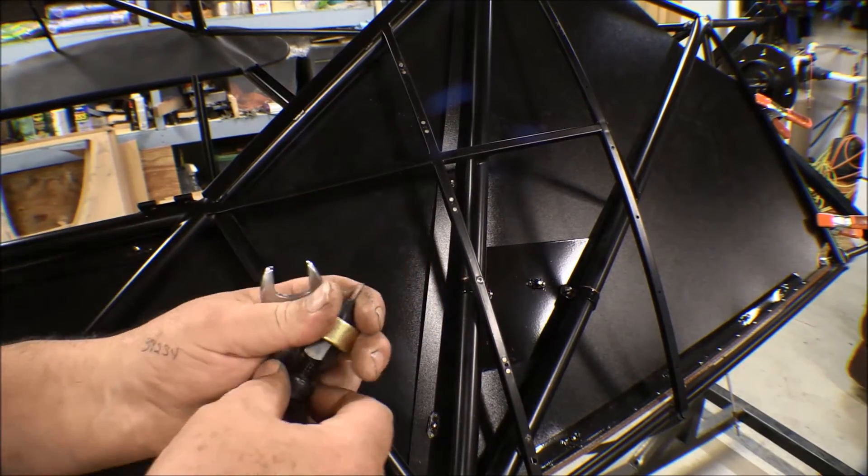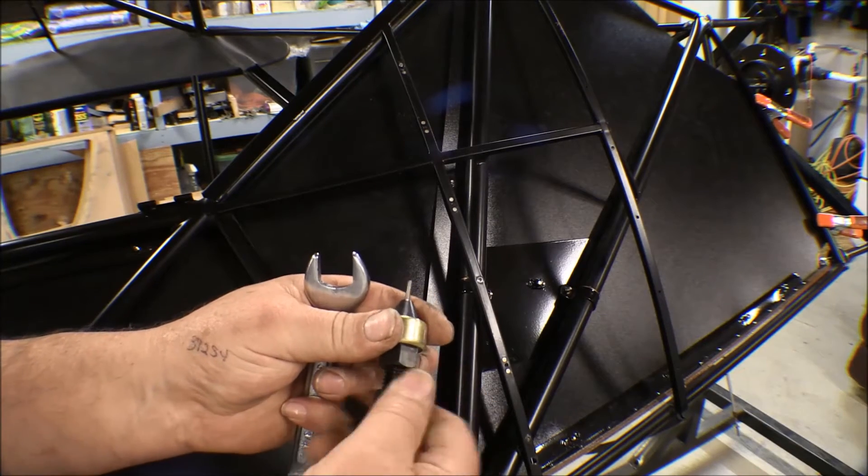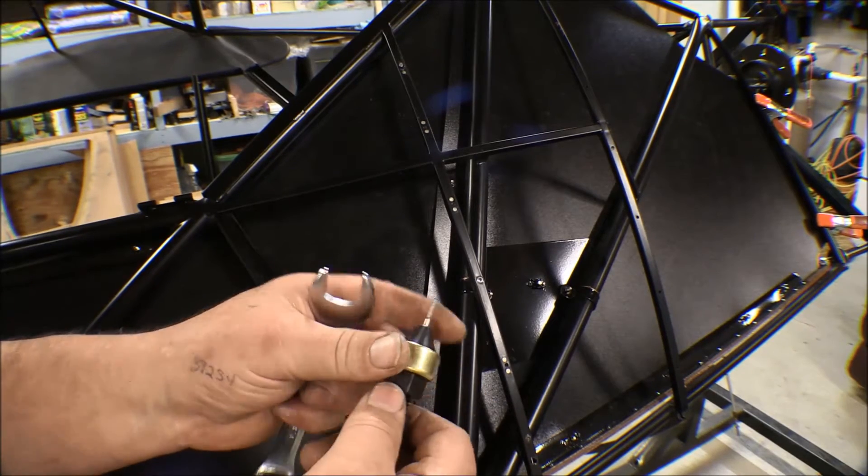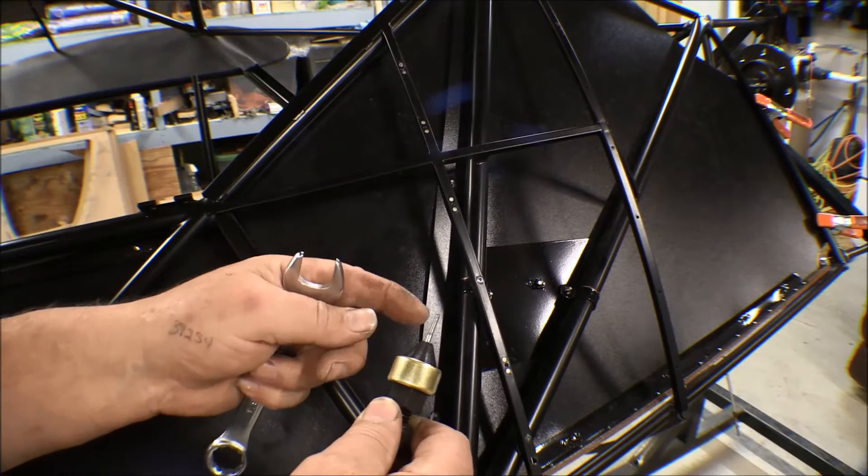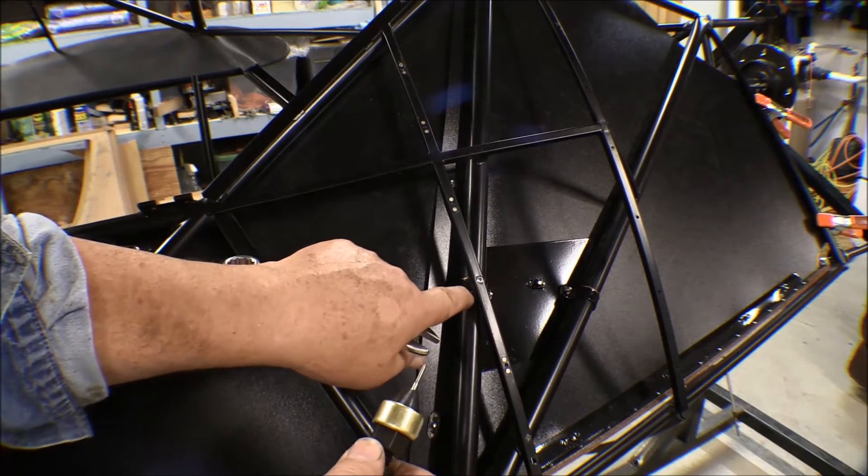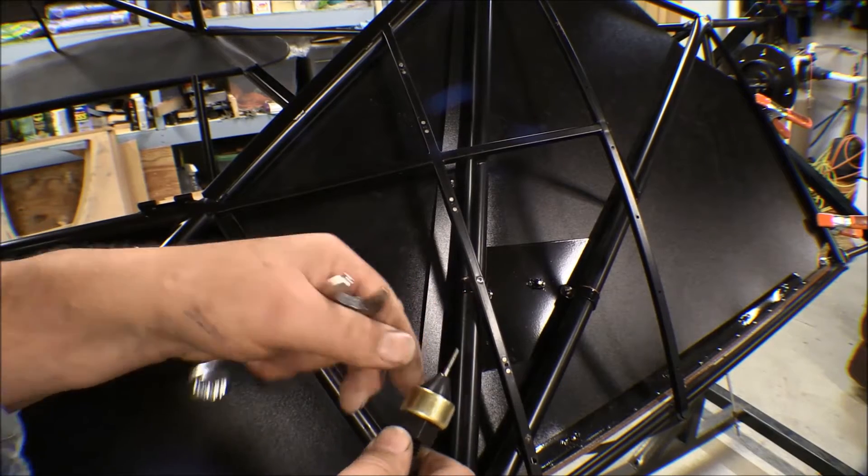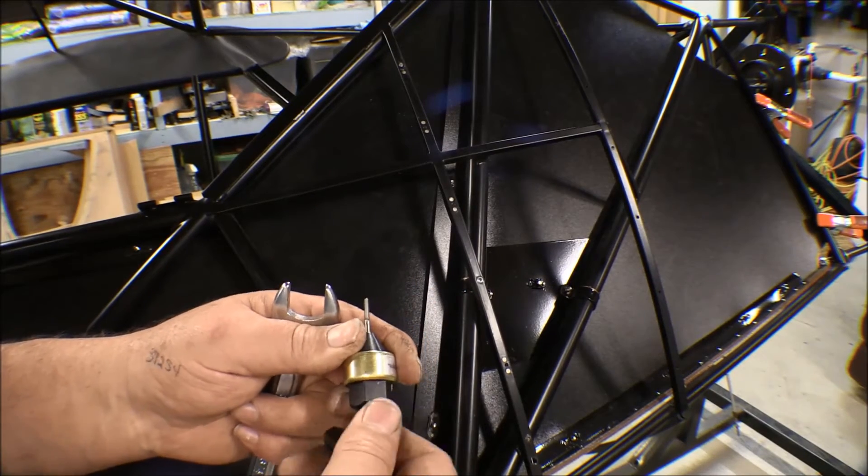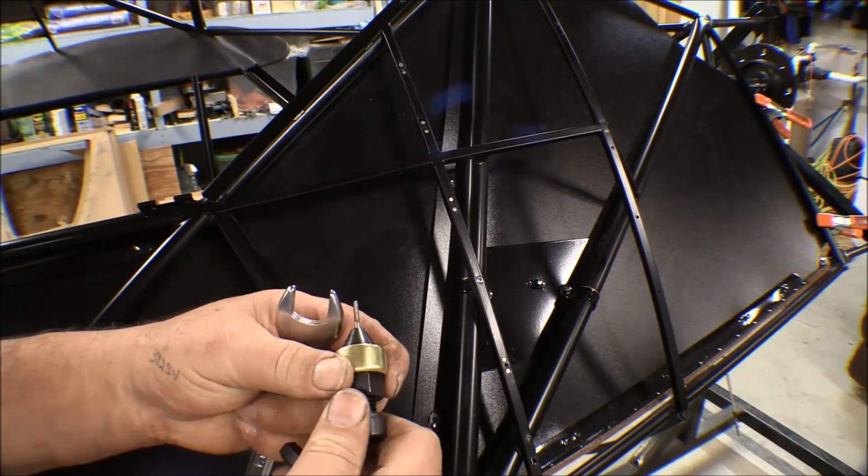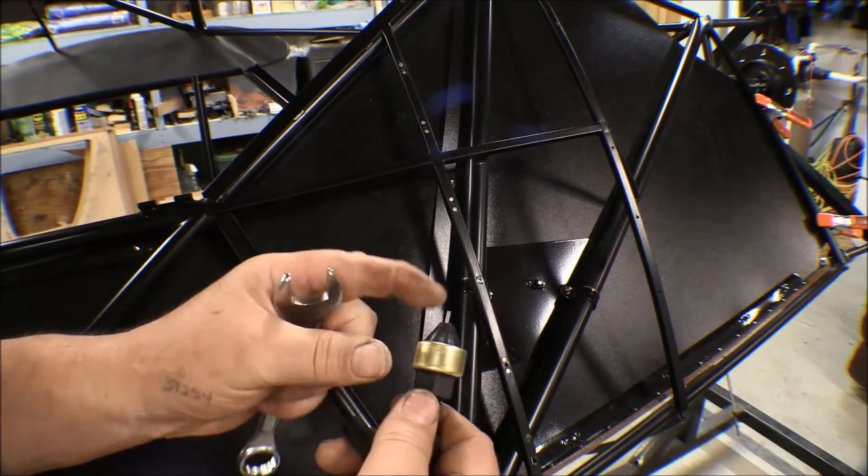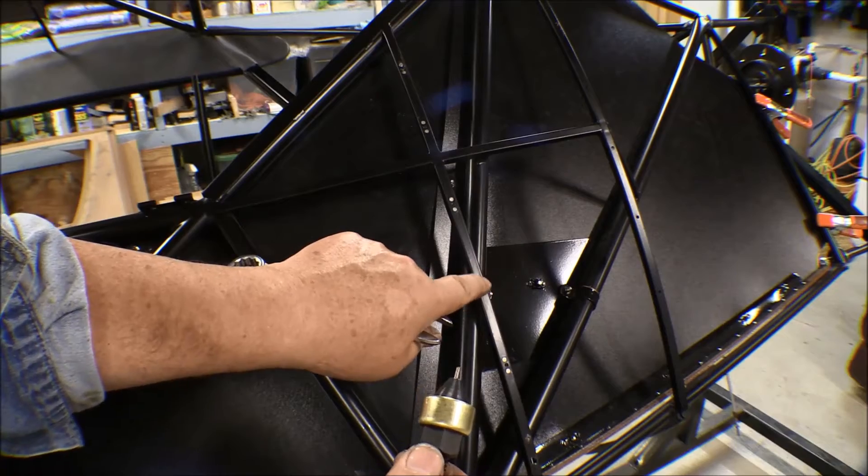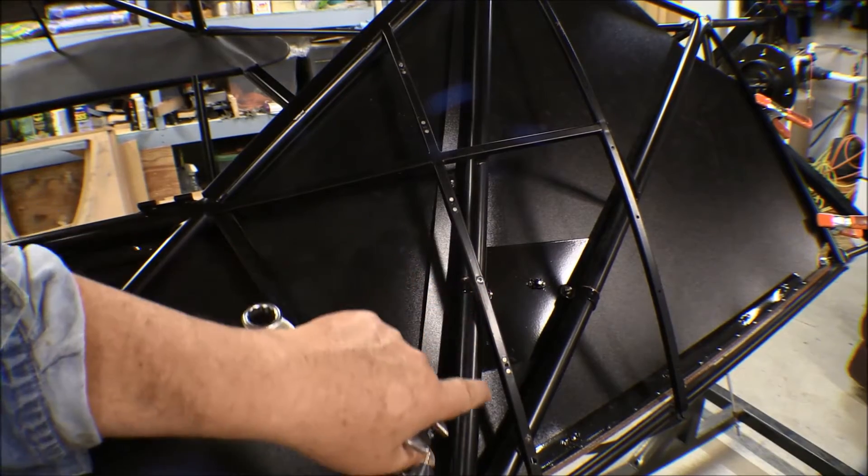For these ones in the tube like this one here, having this all the way out where you can get the full length of the threaded portion for the nutsert, the tip would hit this tube back here. So we had to set this so that it was only on there part way so it didn't go all the way through and hit that tube.